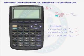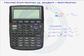So let's use the calculator to look at some of the differences between these two distributions. We are going to compare the standard normal distribution to a t distribution with 1 degree of freedom, then with 2 degrees of freedom, and finally with 30 degrees of freedom.